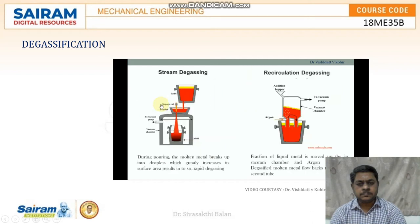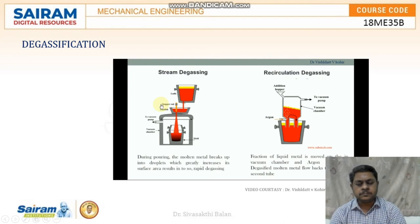There are different variations of vacuum degassing. In case of stream degassing, the molten metal is poured in the form of a stream into the ladle, which increases the surface area and leads to rapid degasification. In case of recirculation degassing, the molten metal is taken into the vacuum chamber and argon gas is passed through it. The recirculation of the molten metal creates more agitation, which helps in the removal of dissolved gases. In this way, vacuum degassing is an effective way to achieve defect-free castings.